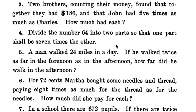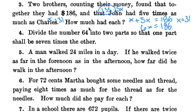Number 3. Two brothers counting their money found that together they had $186 together. So that means the same thing as plus. John had 5 times as much as Charles. We don't know as much about Charles, so we're going to put an x. Remember what we know about John. 5 times as much as Charles. And together they had $186. So we have x plus 5x equals $186. 5 and 1 is 6. 6x is $186. Divide both sides by 6 and x is $31. So Charles has $31 and John has $155, 5 times $31.